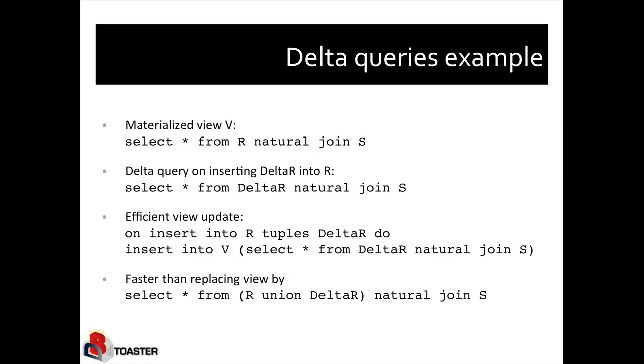So in general, executing this on-insert trigger will be faster than replacing the view by recomputing it completely, which would be doing a query that says select star from the result of unioning R with delta R natural join S. That relation would be computed by joining two large relations. R union delta R will in general be much larger than just delta R.